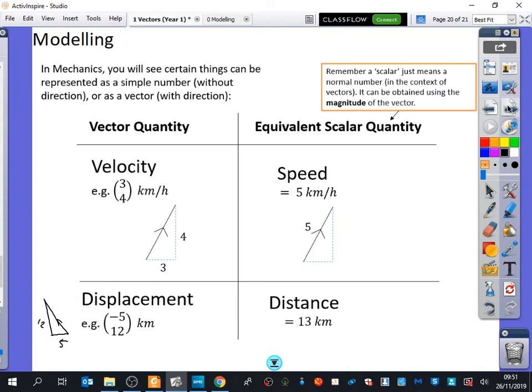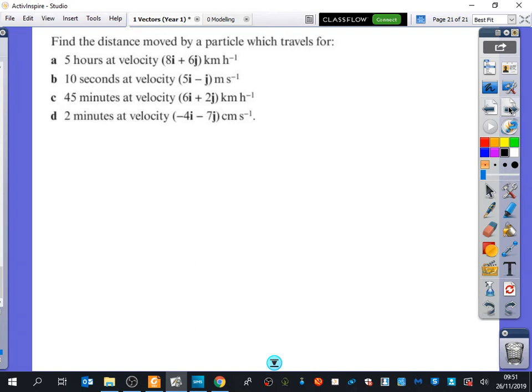I'm going to look at doing one question like this together. It says, find the distance moved by a particle which travels for these different things. I'm going to do part A, and then you're going to do parts B, C, and D, looking really carefully at the units. So in part A, it says find the distance moved. Is it asking for a vector answer or a scalar answer?